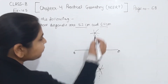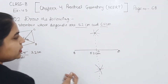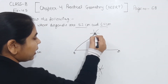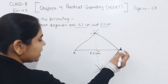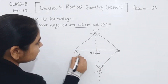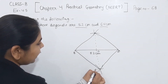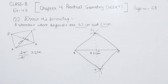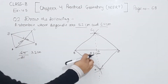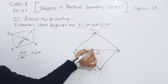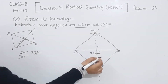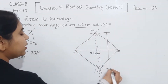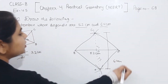So these are the points where the arcs intersect with the perpendicular bisector. Now we join these points with B and D — on the upper side and the lower side. So this gives us points A, B, C and D. One diagonal is 5.2 cm and the other — from here to here is 3.2 cm and from here to here is 3.2 cm — meaning the full diagonal is 6.4 cm.